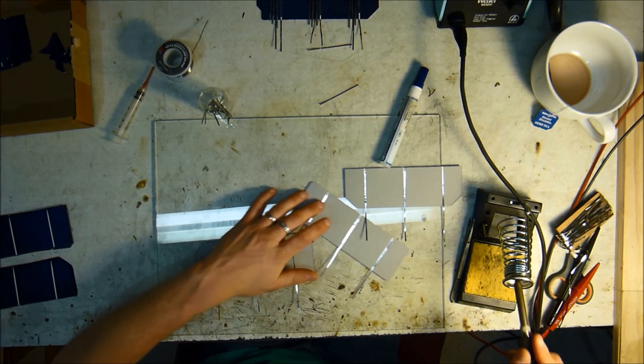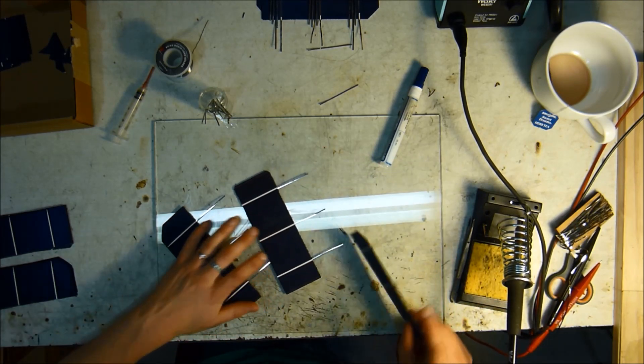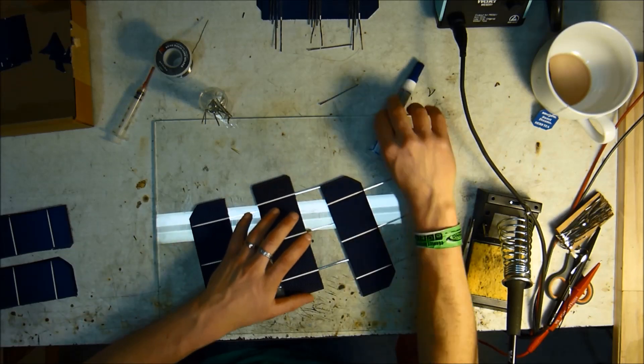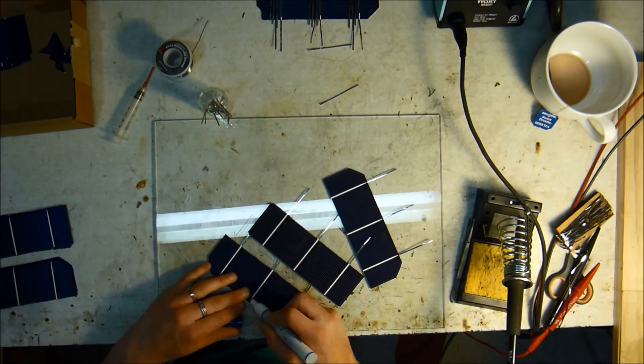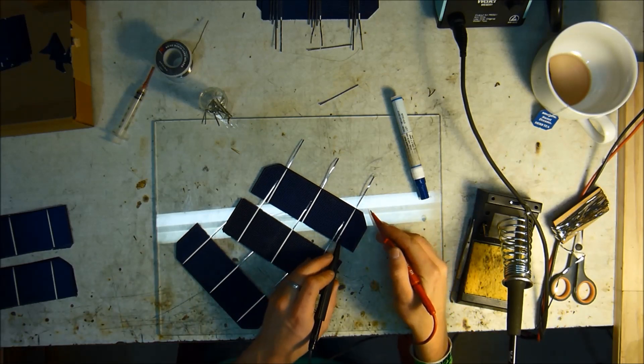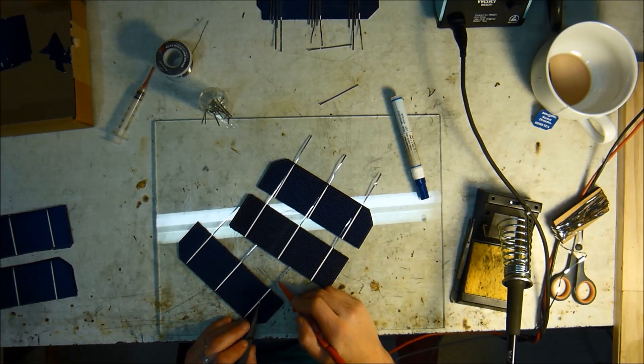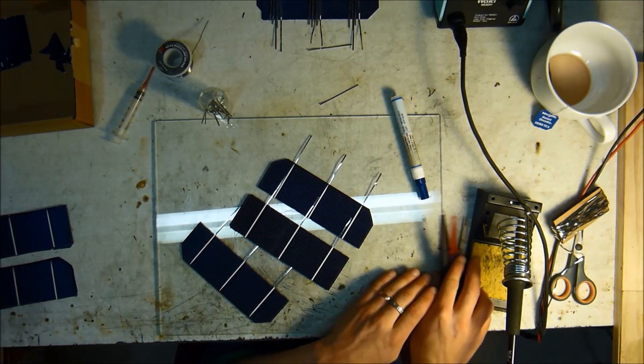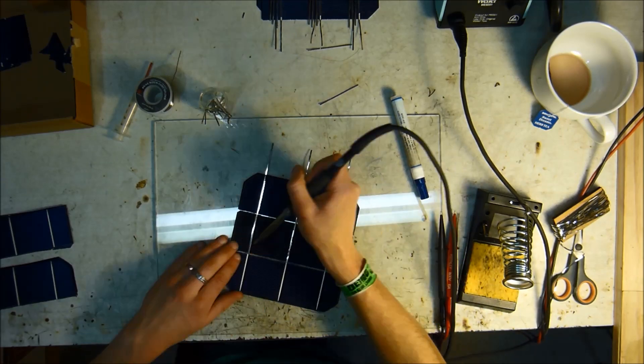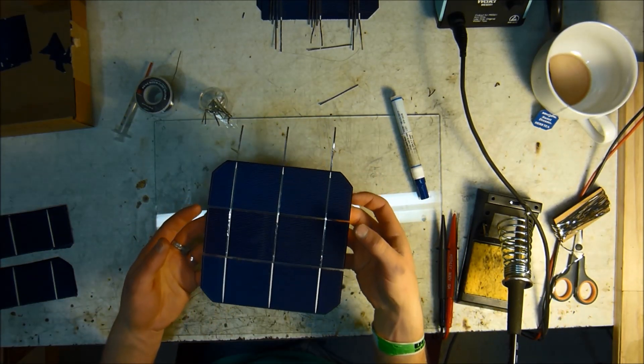So now I've got a whole cell done, or three cells really. Flip them all over and flux pen them again. So now, at this point, you're going to want to test them because sometimes you'll have one that goes short if you put too much heat on it or something like that. They're all good. There's one three cell unit done.